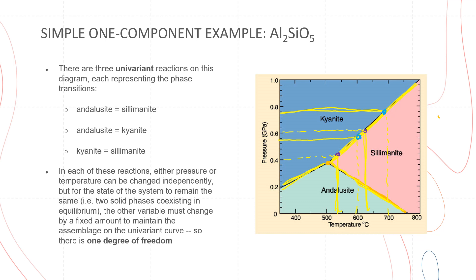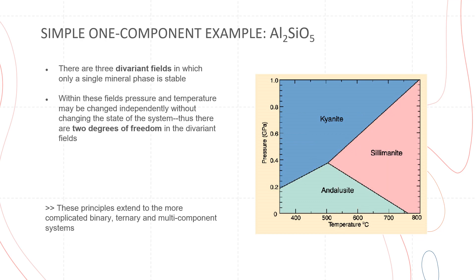For example, if you wanted to change the temperature from 600 to 700 degrees Celsius, you would also have to change the pressure correspondingly so it still lies on the curve. Similarly, if you change the pressure from 0.4 to 0.6, you would have to adjust the temperature accordingly. That is the meaning of a univariant curve in the Al2SiO5 example. Last but not least, there are three divariant fields in which only a single mineral phase is stable: kyanite, sillimanite, or andalusite. Within these fields, pressure and temperature can be changed independently without changing the state of the system — two degrees of freedom.